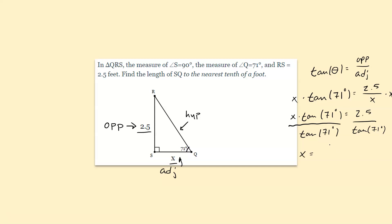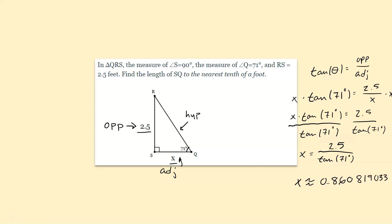Typing 2.5 divided by tangent of 71 into the calculator gives approximately 0.860819033. We want to make sure this makes sense: since 2.5 is already small and this side is opposite the smaller angle, it makes sense that the adjacent side would be even smaller. Rounding to the nearest tenth gives x ≈ 0.9 feet.